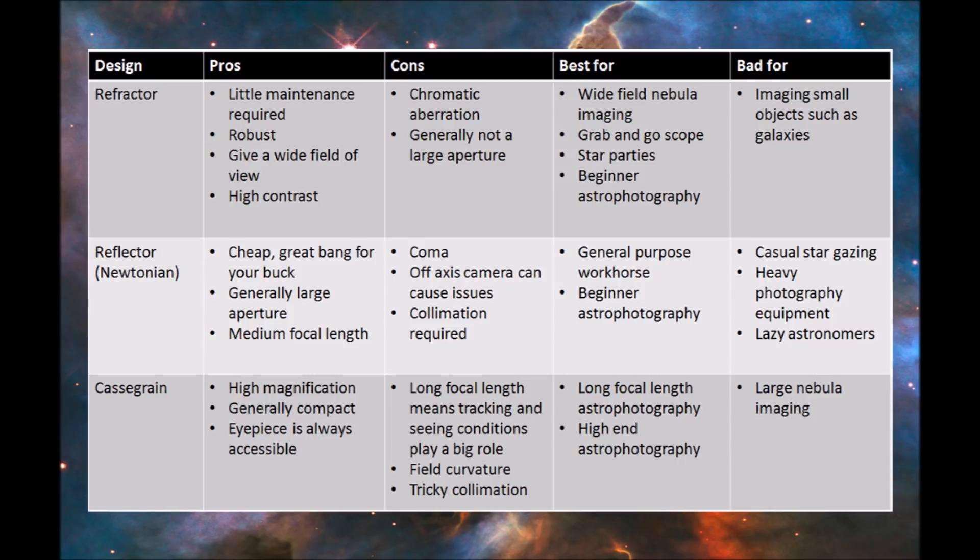The other type of telescope is the Cassegrain. Cassegrains tend to have a really long focal length, because they're bending the light back on themselves twice. This means that you have a high magnification. Also, these types of telescopes are generally really compact for the type of focal length that you get. Also, the eyepiece is always in the same position. It's always at the back. With a Newtonian telescope, if you're trying to observe, you might have to get onto a chair or a ladder to try and get to the eyepiece. But the Cassegrain telescope will always have the eyepiece in the right position.